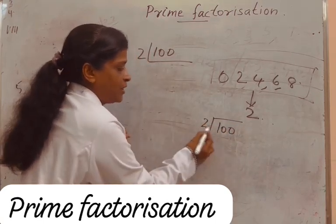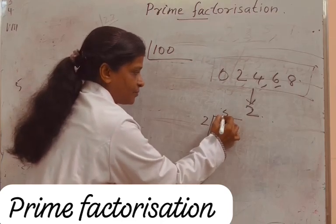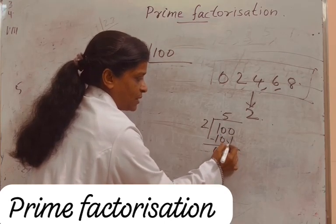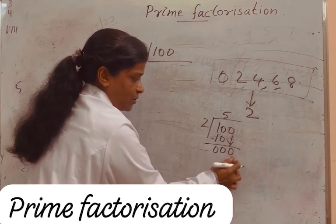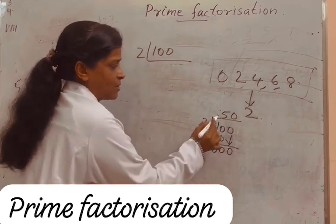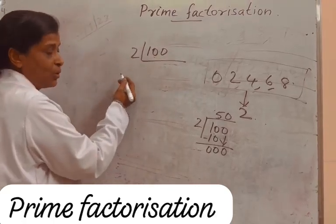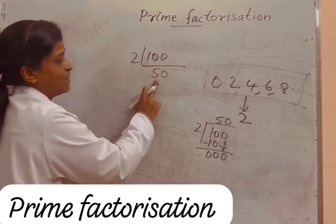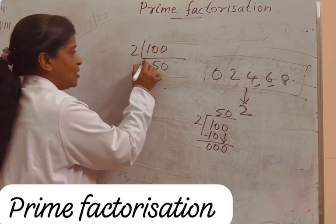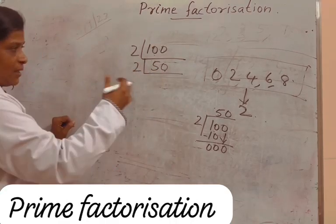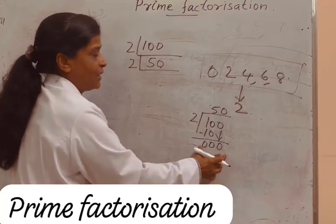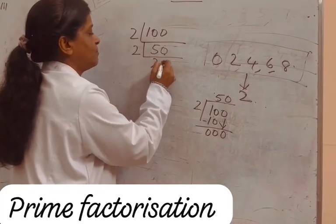100 divided by 2: bring down 0 — if the brought-down number is less than the divisor, put a 0. So 100 divided by 2 is 50. Again, is 50 divisible by 2? Yes, the last digit is 0, so it is divisible by 2. 50 divided by 2 — if you don't know, divide and find out. 50 divided by 2 is 25.